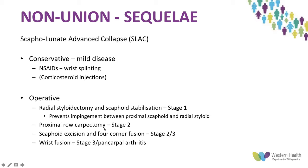Conservative management for SLAC wrist is appropriate in mild or Stage 1 disease, using NSAIDs and wrist splinting; corticosteroid injections have been described but lack strong evidence. Operatively, Stage 1 can be treated with radial styloidectomy since the arthritis is restricted to that area. For Stage 2 and 3, options are proximal row carpectomy, scaphoid excision with four-corner fusion, or wrist fusion.